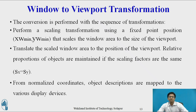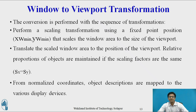Using a fixed point position (x_w_min, y_w_min), this scales the window area to the size of the viewport, then translates the scaled window area to the position of the viewport. The relative proportion of objects is maintained if the scaling factors are equal, that is s_x equals s_y. From normalized coordinates, the object descriptions are mapped to various display devices, which is why we require scaling factors s_x and s_y.